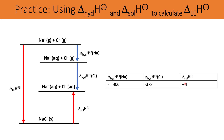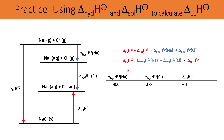We use these values to calculate the lattice enthalpy. Route 1 equals Route 2, so: lattice enthalpy + enthalpy change of solution = sum of hydration enthalpies. Rearranging: lattice enthalpy = sum of hydration enthalpies − enthalpy change of solution. Substituting our values gives a lattice enthalpy of −788 kJ mol⁻¹, which is expected to be exothermic because lattice enthalpy represents bond formation.